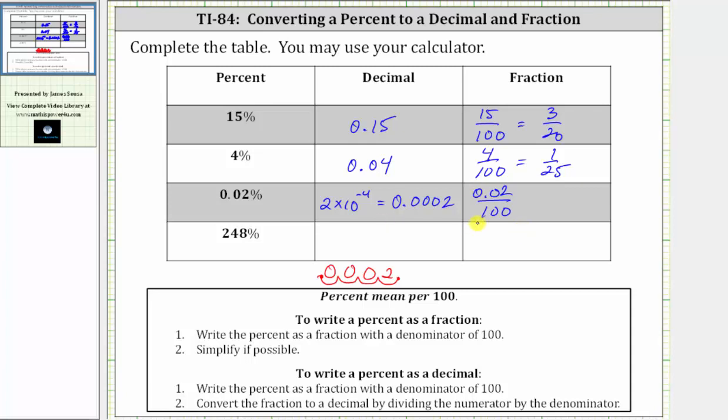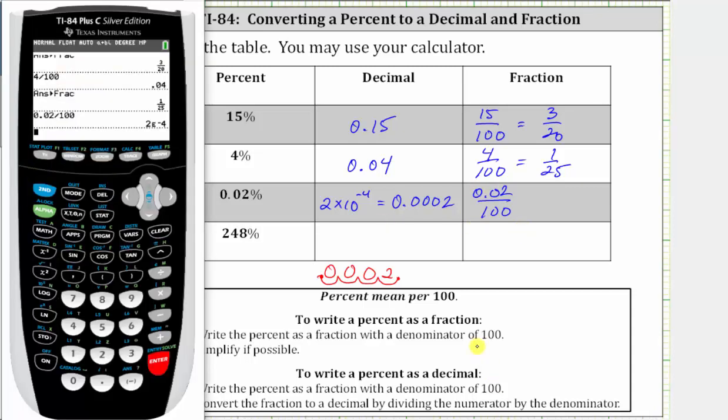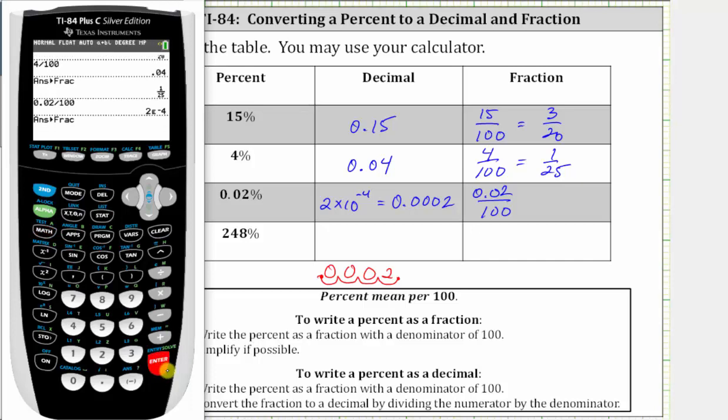And now to find the simplified fraction, we press math, enter, enter, which gives us 1 5,000th.